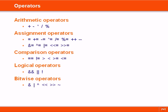In this section we'll take a look at the operators in C# that are used to operate on numbers. They can be grouped into five types: arithmetic, assignment, comparison, logical and bitwise operators.